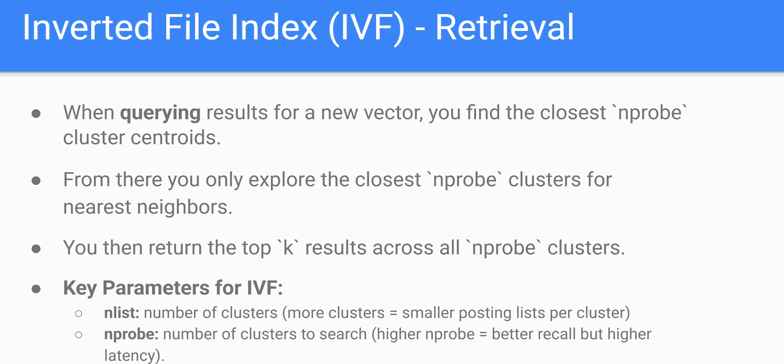nProbe is the second parameter — the number of clusters to search at retrieval time. If you probe more clusters, say three or four instead of two, you will get better results because you'll be searching over more vectors in the database. The only problem is that will be a little bit slower. For retrieval applications like search or online environments where you need results very quickly, latency is something to keep in mind. Sometimes you're willing to give up a little bit of recall — the amount of relevant results your algorithm can find — for the sake of a faster algorithm. And that is Inverted File Index.